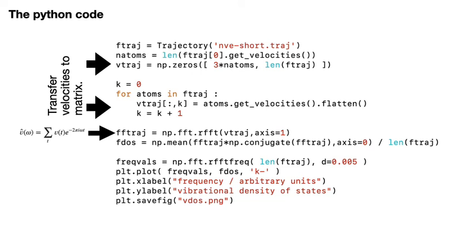The line that sets ff_tranj is the one that does the Fourier transform of the time series of velocities. The output from this command, ff_tranj, is still a matrix. The rows of this matrix contain the Fourier transforms of the time series for each component of the velocity — for example, element 4 of this matrix contains the Fourier transforms of the time series of the y components of the velocity for atom 2. The multiplication here — ff_tranj times np.conjugate(ff_tranj) — performs the element-wise product of these two matrices of Fourier transforms. It is important to reiterate that we are not doing matrix multiplication; we are instead constructing a new matrix where the ij element is computed by taking the ij element of ff_tranj and multiplying it by the complex conjugate of the ij element of ff_tranj.